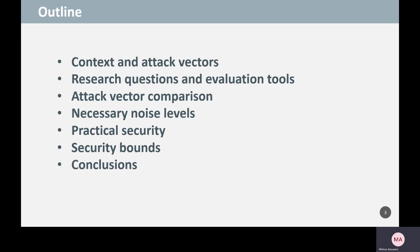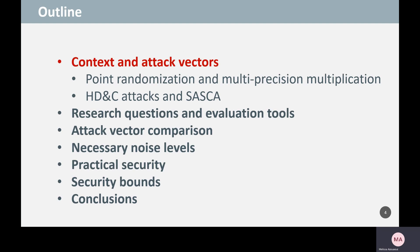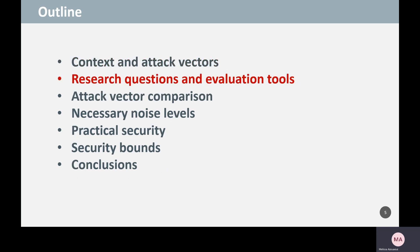To make this talk easy to follow, we will stick to the following plan. First, I will go over the context of our evaluation by describing an example of how point randomization can be implemented in practice, and which attack vectors were identified to evaluate it. Then I will explicitly state the research questions we answer in this work, which correspond to our main contributions, and describe the tools we use to answer them. These questions mainly relate to comparing different attack vectors, evaluating the necessary side-channel noise for point randomization to achieve reasonable security, assessing the practical security on a concrete device, and extrapolating results to more difficult-to-analyze implementations from a worst-case security perspective.